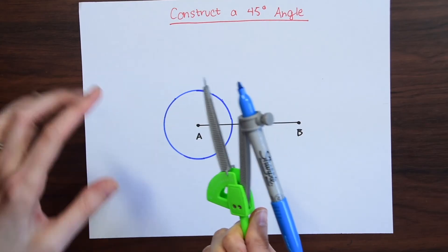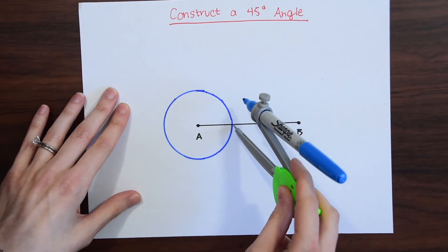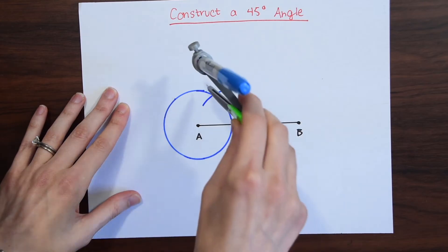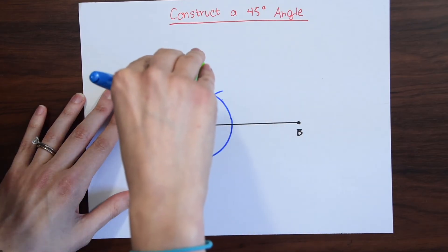Now without changing the distance of our compass, we're going to take our compass point to this intersection right here and make a little cross section on the circle. Then we're going to go to our new cross section and make another little arc on the circle.